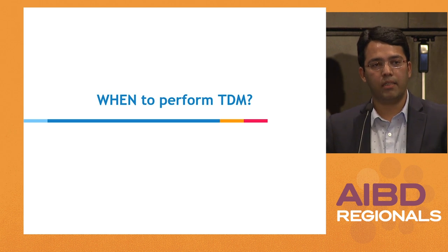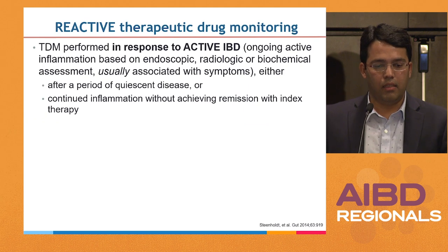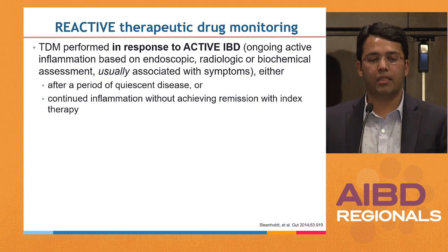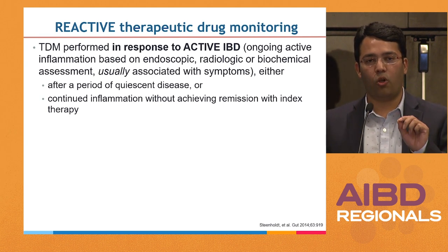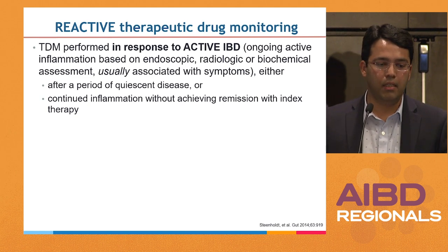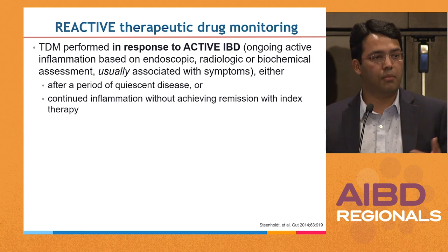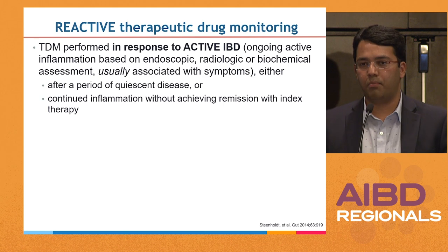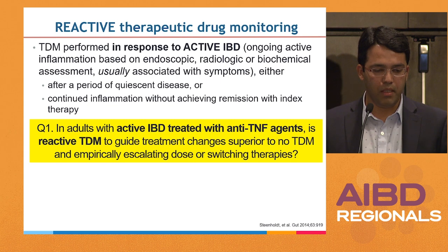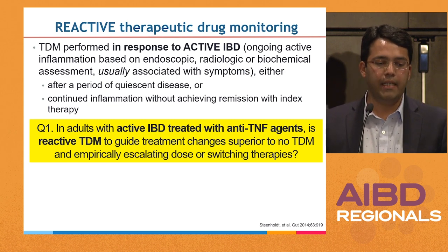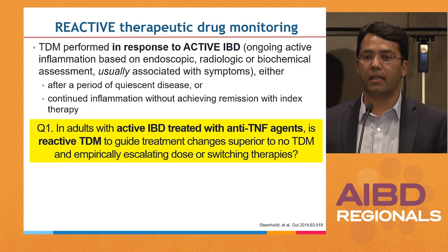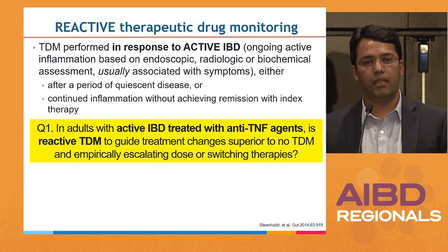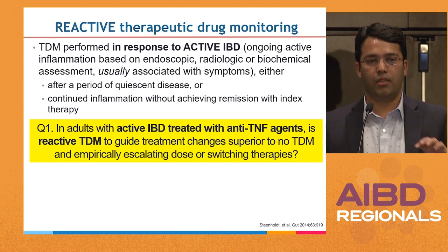When do you perform therapeutic drug monitoring? Two concepts: reactive and proactive. Reactive TDM is performed in response to active IBD — which does not have to mean a flaring patient; it can be someone with clinically quiescent disease who has ongoing endoscopic activity or hasn't achieved their treatment target. The AGA guidelines addressed whether reactive TDM is superior to empirical treatment changes, where most empirical changes mean escalate the drug first and then switch if the patient doesn't respond.